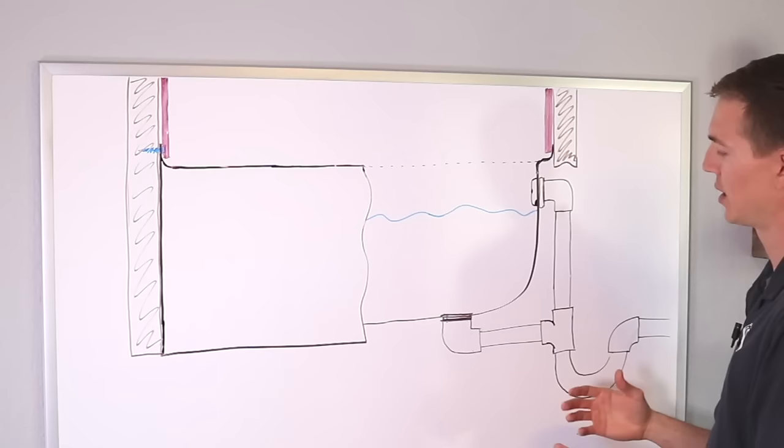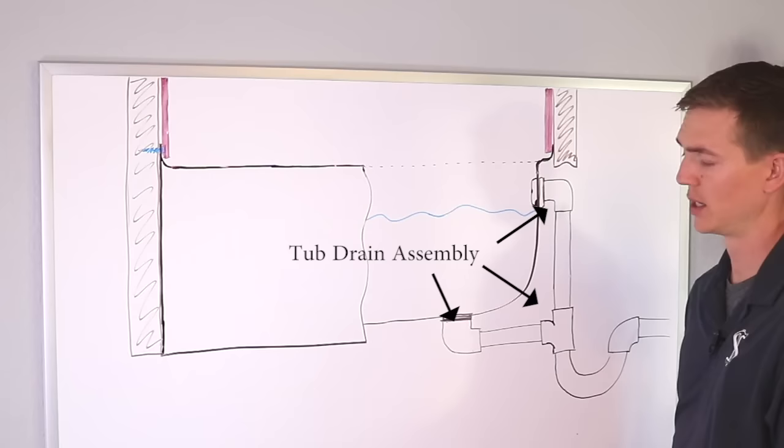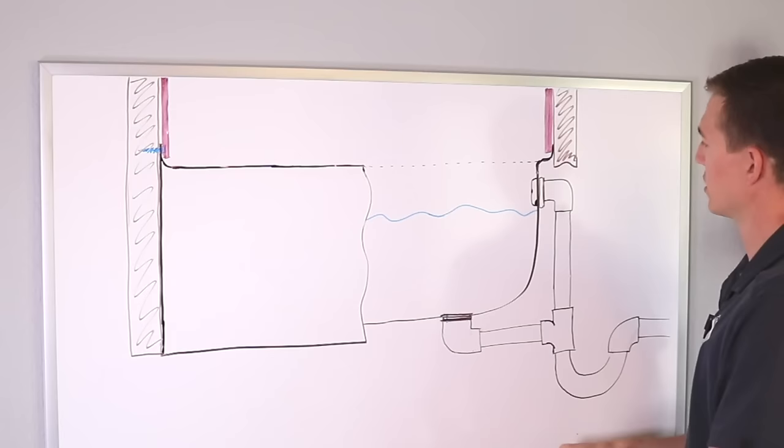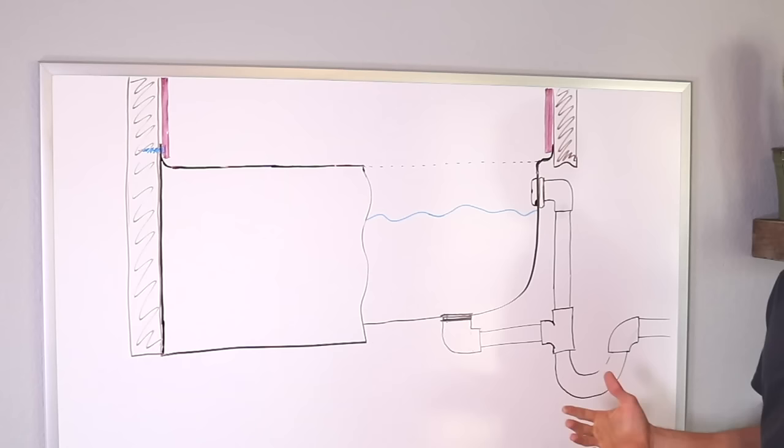Okay and then you have the tub assembly which is this area over here which is composed of basically two drains. You've got your primary drain and then you've got your overflow drain. And then those both connect with this little T connector which feeds into a P trap which then connects into your normal house plumbing. Okay so the water would flow down here through here.